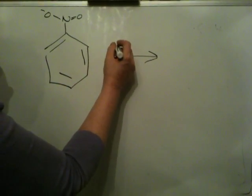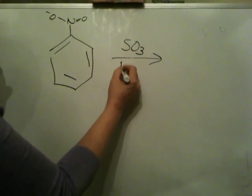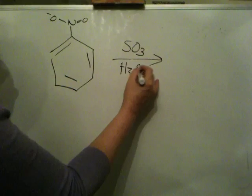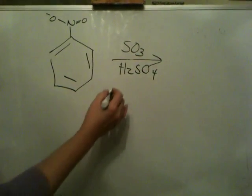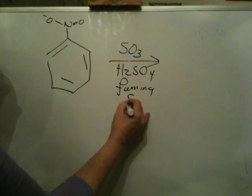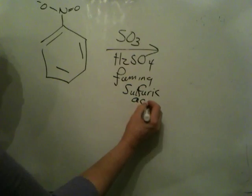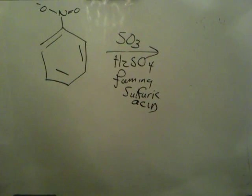Supposing I have this group and I want to sulfonate this aromatic ring that already possesses a nitro group. To sulfonate, as you will recall from class, you need SO3 and sulfuric acid. This is what is called fuming sulfuric acid.